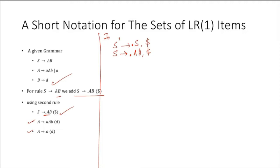After the dot we have A, so we have to add all the production rules for A. We get A to dot small-a capital-A small-b. The lookahead here will be FIRST(B followed by dollar), which is basically D. Another production rule is A to dot A, with lookahead D.